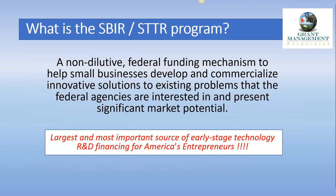SBIR and STTR — the Small Business Innovation Research and Small Business Technology Transfer Research programs — are both non-dilutive federal funding sources to help small businesses develop and commercialize innovative solutions. For most opportunities, they're looking for solutions to existing problems that the agencies are interested in. There are a few areas, like the National Science Foundation, where you can propose solutions to things agencies may not have realized are issues yet, but for the most part agencies have prescribed lists of topics they're funding from year to year.